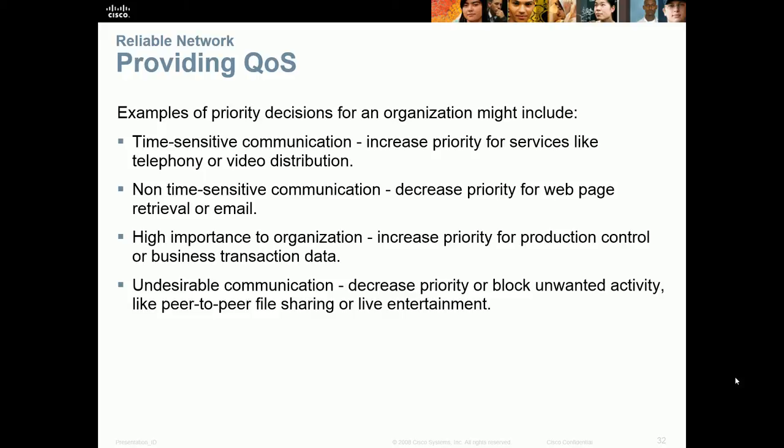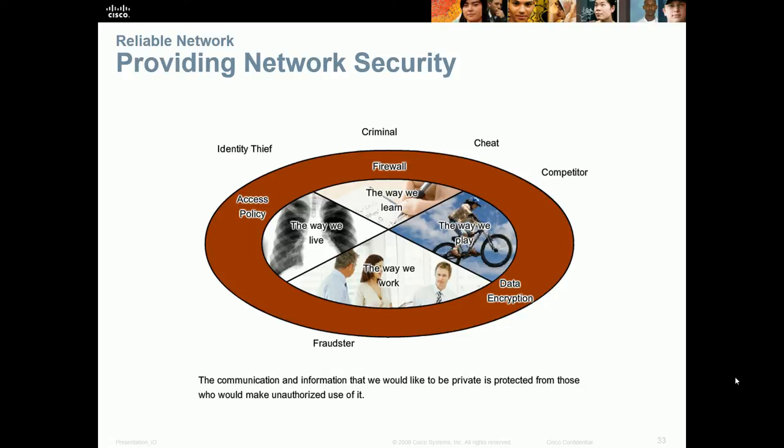Next is quality of service. Because we're putting data, voice, and video on the data network, how do we make sure real-time traffic has higher priority? For example, voice and video — if your webpage takes an extra second, that's not a big deal. But if your phone call is a second out of sync, that's a huge issue. Lastly, networking security protects the way we live, learn, play, and work through encryption, policies, and equipment — keeping out identity theft, criminals, and fraudsters.